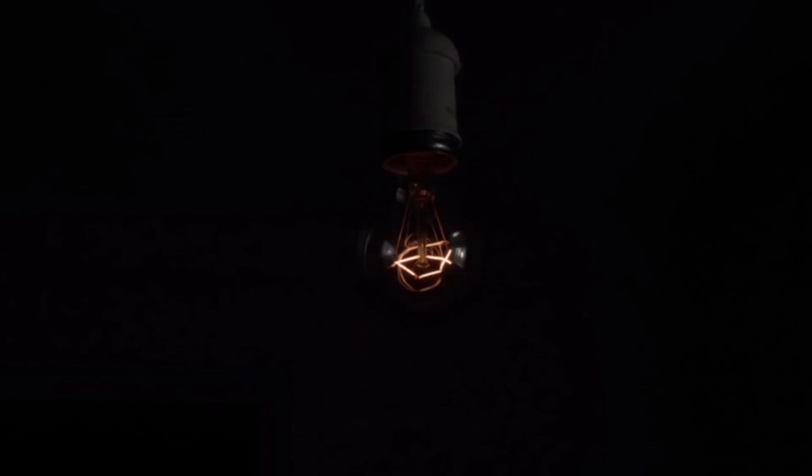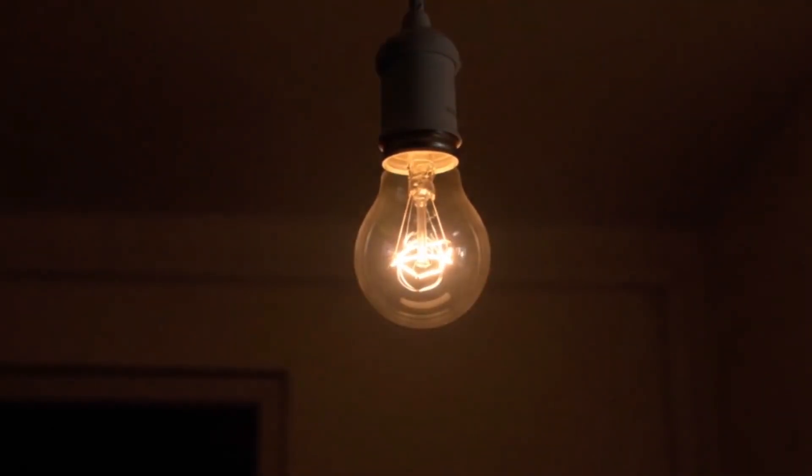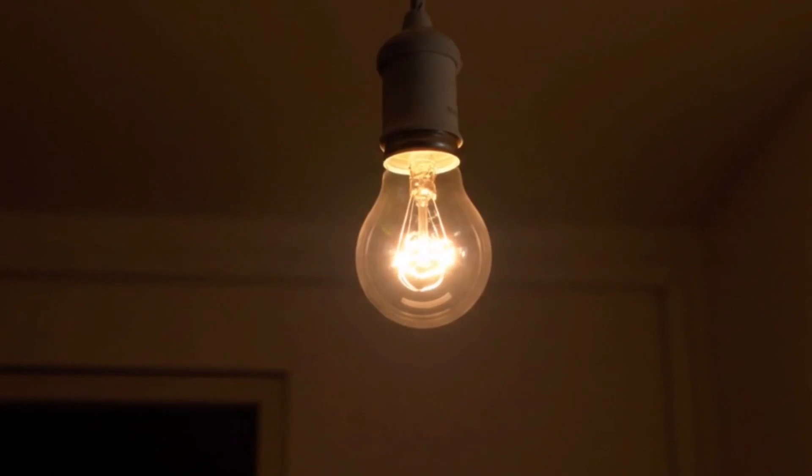So it's no wonder that tungsten is the material of choice when it comes to making incandescent bulbs as we can heat it to really high temperatures without worrying about what's going to happen to tungsten.